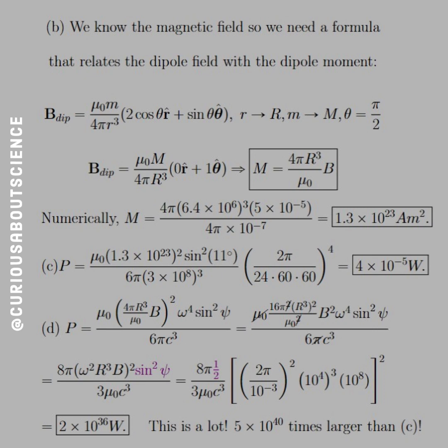But if we plug everything in that was given for the pulsar, what we see is that the power radiated is 2 times 10 to the 36. 36, that is outrageously stronger than what we see in part C. 5 times 10 to the 40 times larger, that's a very, very strong magnet.